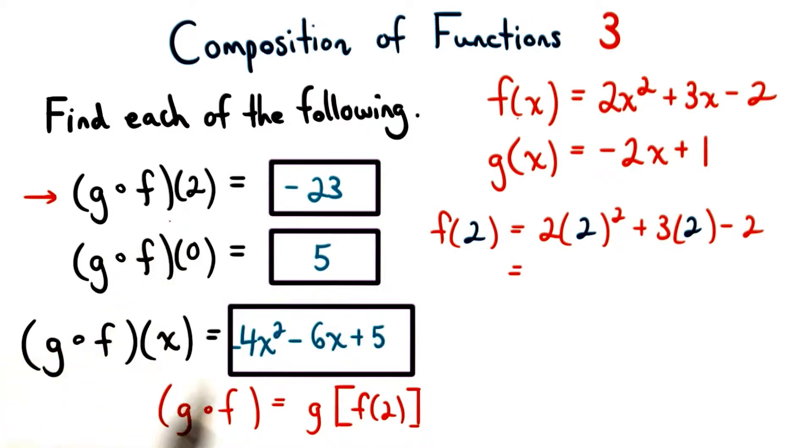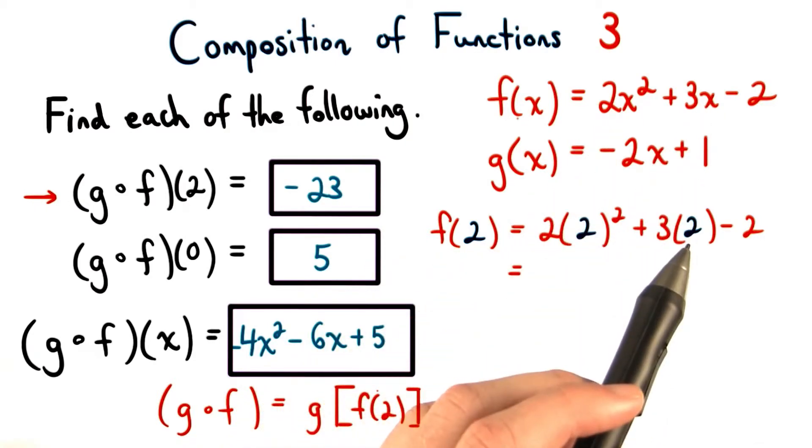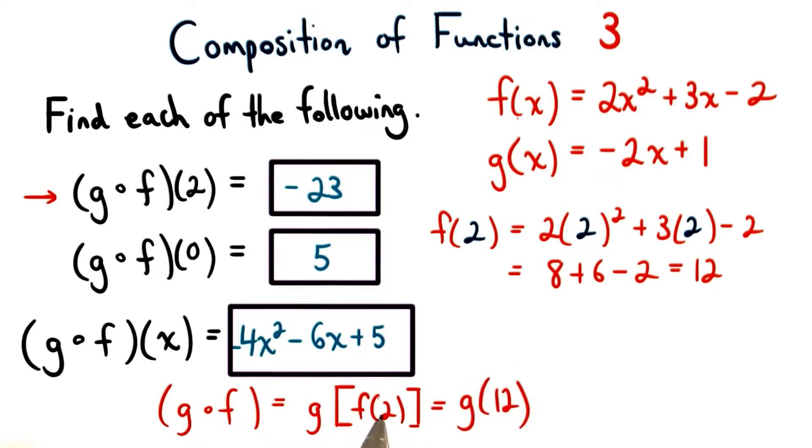For this first one, we'll start by finding f of 2. We'll take 2 and plug that in for x in the function f. Doing so, we get an output of positive 12. So when the input of f is 2, the output is 12.